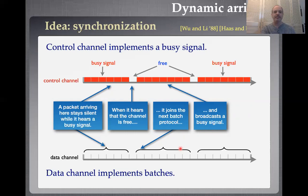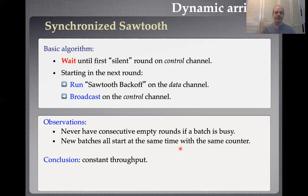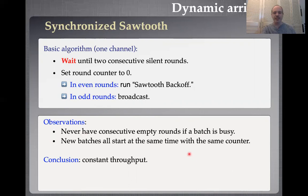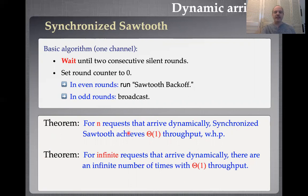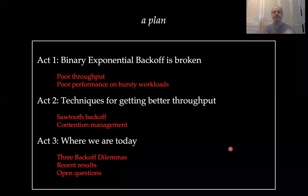A packet arriving while a batch is active sees a busy signal on the control channel. When the batch is done, there will be an empty slot — a free slot. When you see that empty control channel slot, everyone in the waiting room can immediately start the next batch. We've coordinated things into batches using a control and data channel mechanism. Let's call this the synchronized sawtooth protocol. The result: if you have N requests arriving over time, synchronized sawtooth achieves order-one throughput — we use at least a constant fraction of our channel bandwidth efficiently.